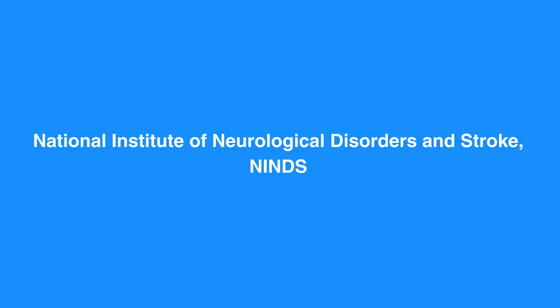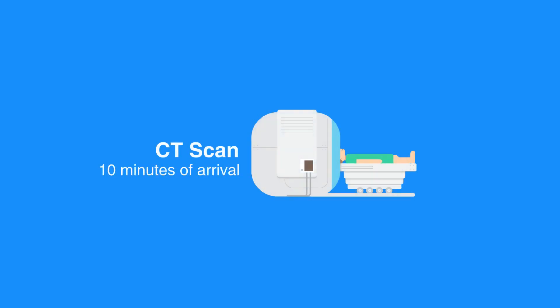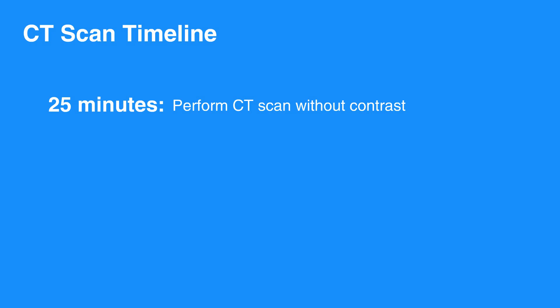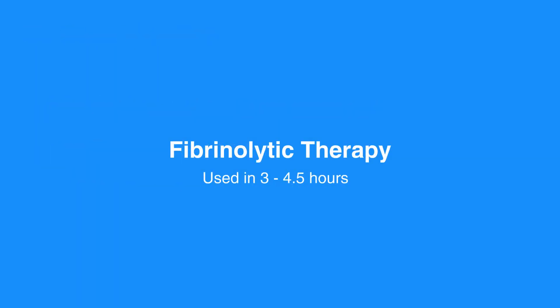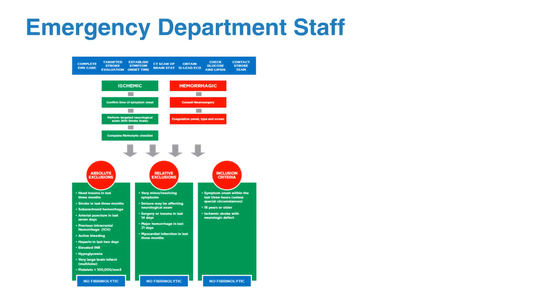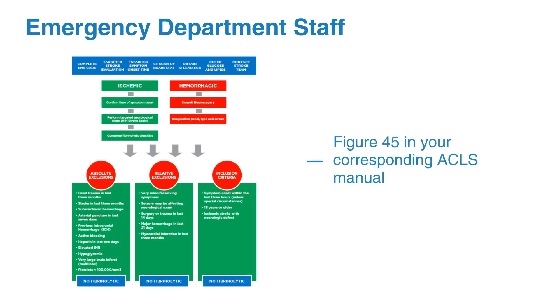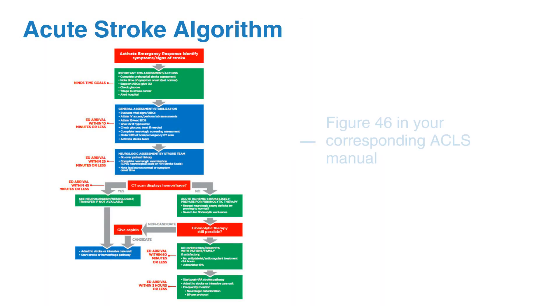If the time of symptom onset is known, the National Institute of Neurological Disorders and Stroke, or NINDS, has established time goals. The NINDS time goals advise a general assessment by expert and urgent CT scan without contrast within 10 minutes of arrival. Within 25 minutes of arrival, perform a CT scan without contrast and a neurological assessment, and read the CT scan within 45 minutes. Within 60 minutes, evaluate criteria for using and administering fibrinolytic therapy or clot buster. Fibrinolytic therapy may be used within 3 hours of symptom onset, or 4.5 hours in some cases. Within 180 minutes of arrival, the individual should be admitted to the stroke unit. For details, refer to figures 45 and 46 in your corresponding ACLS manual.